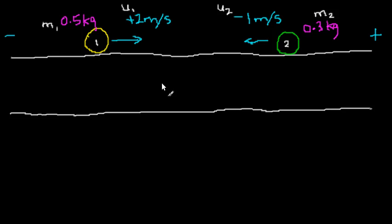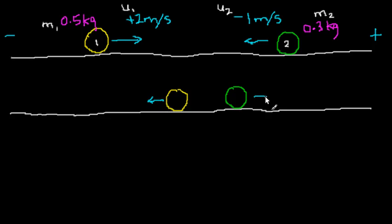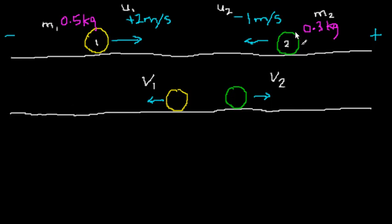Let's say two balls collide — the yellow and the green ball — and after they collide, they bounce off each other and go in their own directions. After colliding, the yellow ball goes at a velocity of v1, and the green ball goes at a velocity of v2. Now, can we find — given the mass of the balls and the velocities before collision — can we find the velocities after collision?